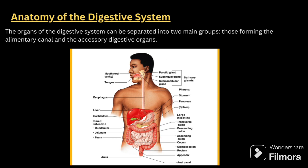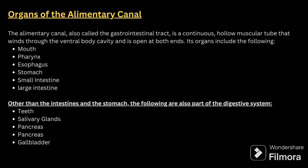The organs of the digestive system can be separated into two main groups: the alimentary canal and the accessory digestive organs. I have given an image here; if it is not visible, please check the image in Google so it will help you understand which parts are related to the digestive system. The alimentary canal is also called the gastrointestinal tract — a hollow muscular tube that winds through the ventral body cavity, open at both ends. The organs include mouth, pharynx, esophagus, stomach, small intestine, and large intestine.